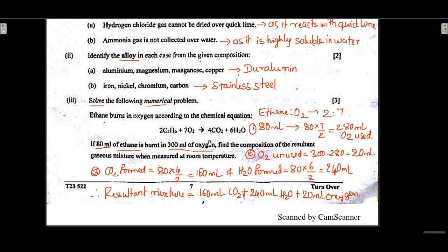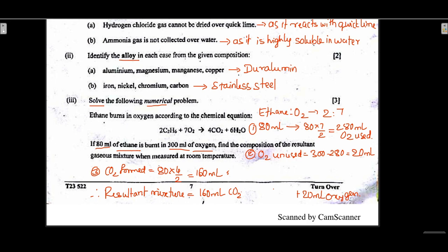The composition of the resultant gaseous mixture measured at room temperature: water is excluded because at room temperature water is liquid. So two components remain: carbon dioxide formed in a 2:4 ratio means 160 ml of CO2, and unused oxygen of 20 ml. The resultant mixture is 160 ml of carbon dioxide plus 20 ml of oxygen.